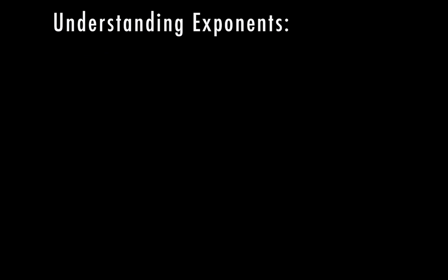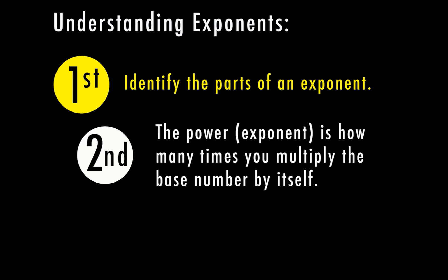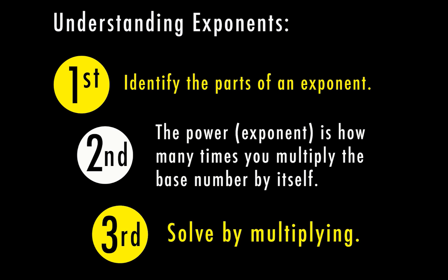Let's go ahead and recap our steps here. So first, we want to identify the parts of an exponent. And that's where we have a base and a power. The power is how many times you multiply the base number by itself. And third, you want to solve by multiplying the numbers out.